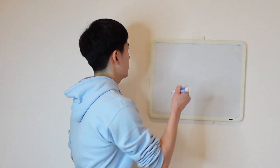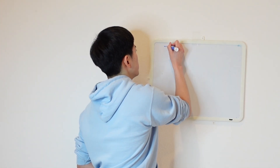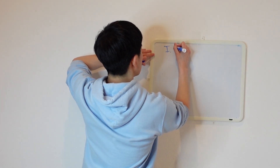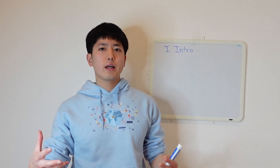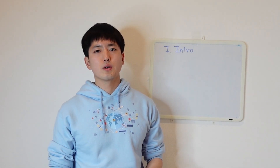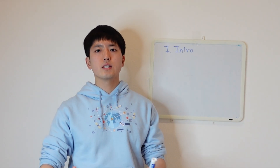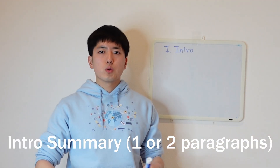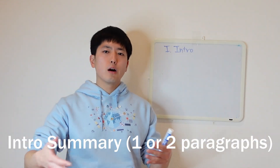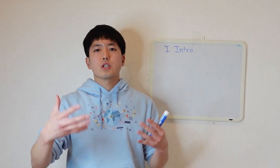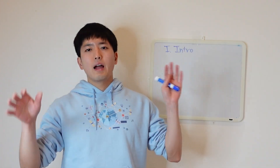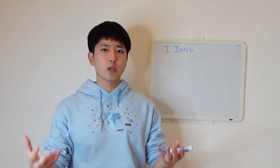In your statement of purpose, you need to start off with an introduction — introducing yourself, your background, and a general summary of why you want to go to grad school. After the intro, one important thing you need to convince the reader of is: why do you want to do a PhD? What is your motivation? These programs don't want students who are going to come in and drop out in the first year.